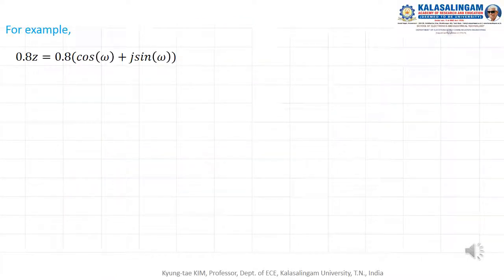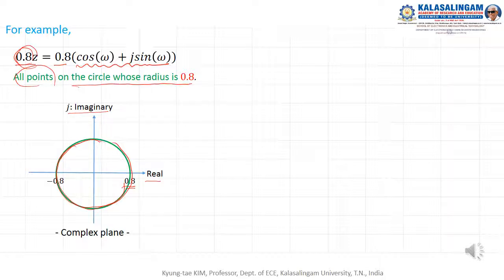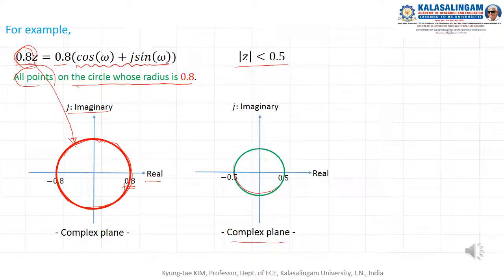For example, given a signal where Z equals 0.8 cosine omega plus J sine omega, this is represented in the complex domain as a circle with radius R equal to 0.8. All points on that circle correspond to Z = 0.8. When the magnitude of Z is less than 0.8, this means the interior of the circle in the complex domain.